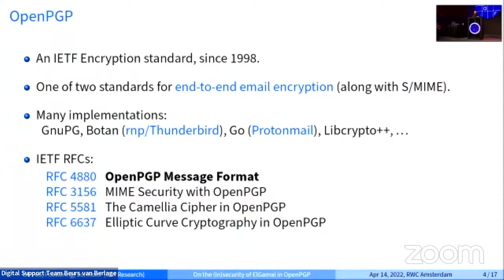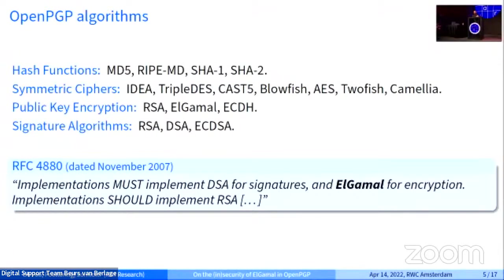The only RFC that really defines all the protocols in OpenPGP is RFC 4880, which is not really a specification on the crypto but just on the message format. Looking into it, you find cryptographic algorithms you can implement: hash functions, symmetric ciphers, and public key encryption. At the moment the only public key encryption algorithms in the RFC are RSA, ElGamal, and ECDH. For signatures you have RSA, DSA, and ECDSA. This talk is about encryption, specifically the ElGamal part — the 1990s finite-field ElGamal, no elliptic curves.